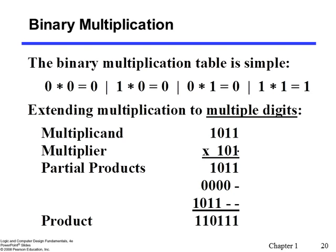Multiplication is quite simple; there are only four cases in the multiplication table: zero times zero, one times zero, zero times one, and one times one — just like decimal. We multiply to get partial products, then add the partial products column-wise to get the final product. Remember how you do decimal multiplication and simply apply that to binary numbers; it is very similar.